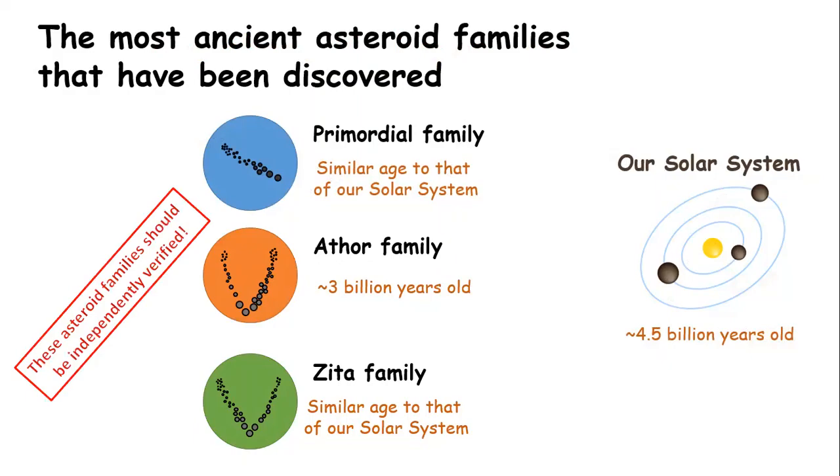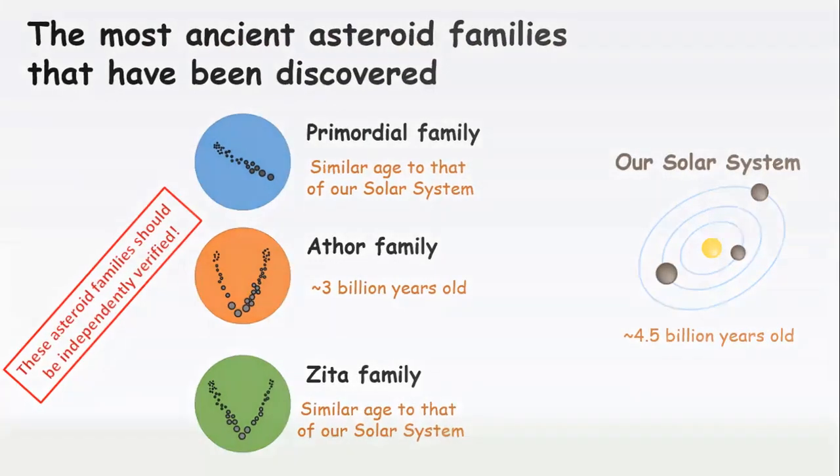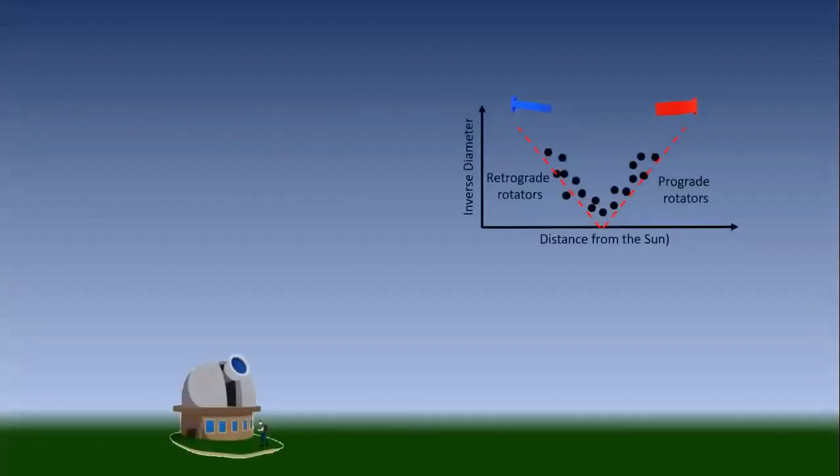However, these families should be independently verified. The best way is to determine the spin direction of the asteroids on the different sides of the V-shape through photometric observations. The members of the inward side of the V-shape of families should be retrograde rotators and vice versa for the outward side.